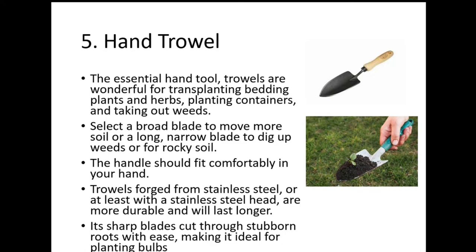The hand trowel is an essential tool for small gardening — most houses have at least one. You can transplant, mix, fill soil, fill compost, fill any medium, and lift small plants with it. Stainless steel with a fiber or wood handle is very durable and long-lasting. Broad blade or sharp blade options are available depending on the purpose. The handle should be comfortable for the user.